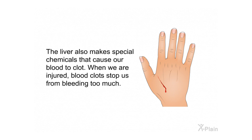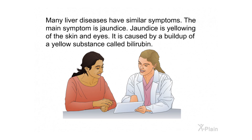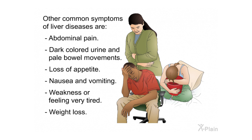Many liver diseases have similar symptoms. The main symptom is jaundice — yellowing of the skin and eyes — caused by a buildup of a yellow substance called bilirubin. Other common symptoms of liver diseases include abdominal pain, dark colored urine, pale bowel movements, loss of appetite, nausea and vomiting, weakness or feeling very tired, and weight loss.